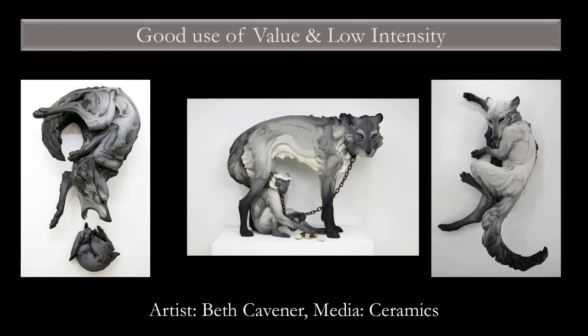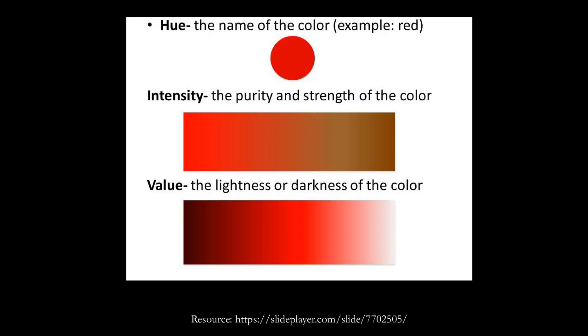When we start to think about value as three-dimensional artists or sculptors, this is Beth Kavaner's work — ceramics. Great sense of low intensity of color. We've softened everything, added a lot of white to the natural colors — it's not super bright. She uses Martha Stewart paints because they're warm and soothing, and she adds black or white to slightly change the color. She does really interesting sculptures — by the way, these are almost life-size. I once saw a two-headed deer that was the size of two deers on a wall. Hue, again, is the name of the color — so red.